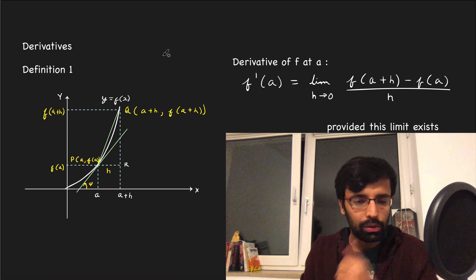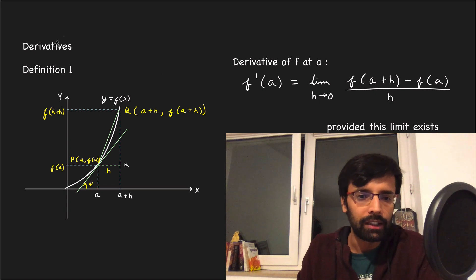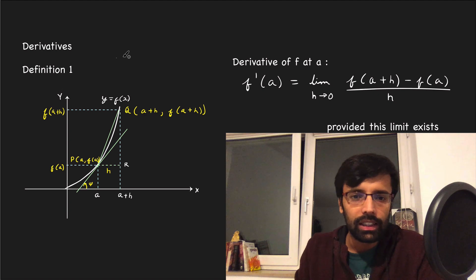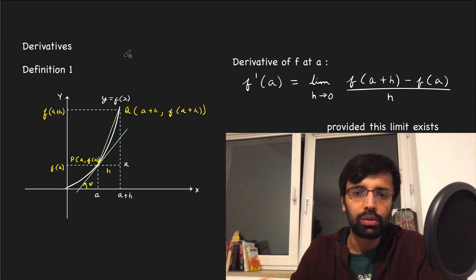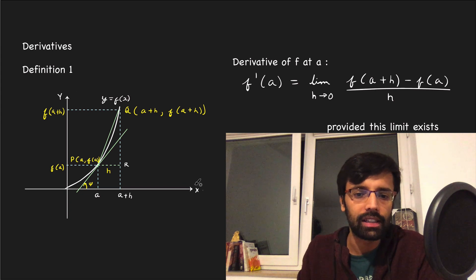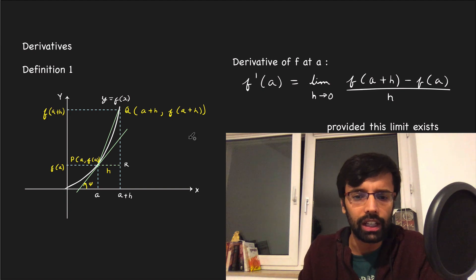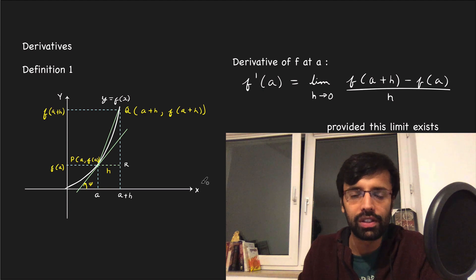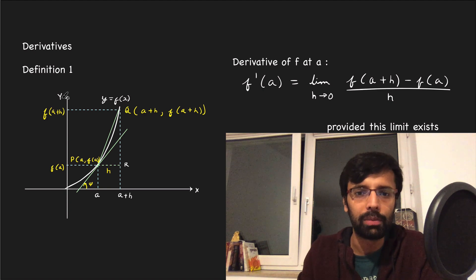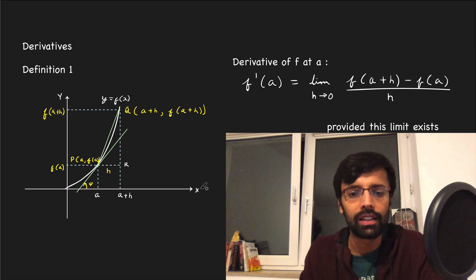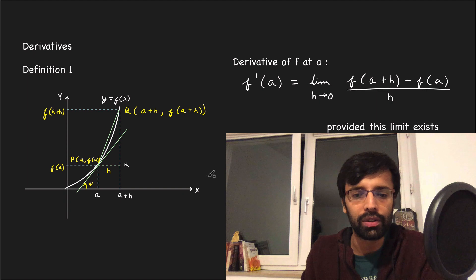First of all, let's understand what a derivative is. It shows how much change of one quantity causes change in another quantity. So let's think that we have y which is a function of x. You can think about y and x in your normal general life — for example, how many viewers are watching my videos and how many subscribers will be added depends on how many are sharing.